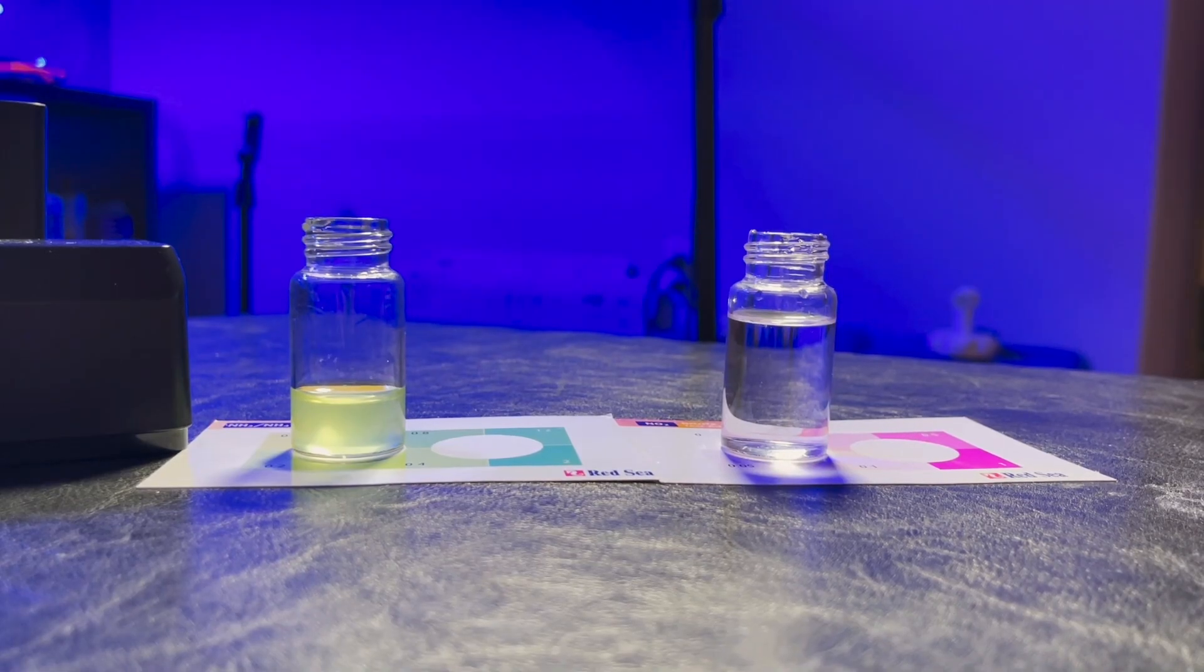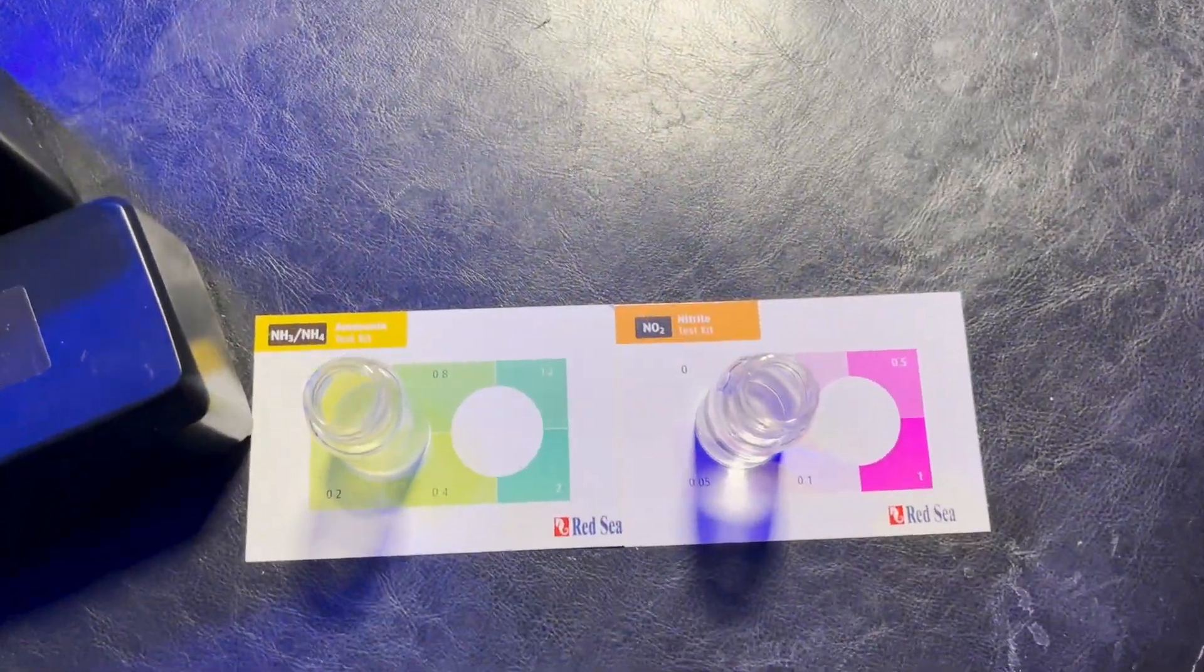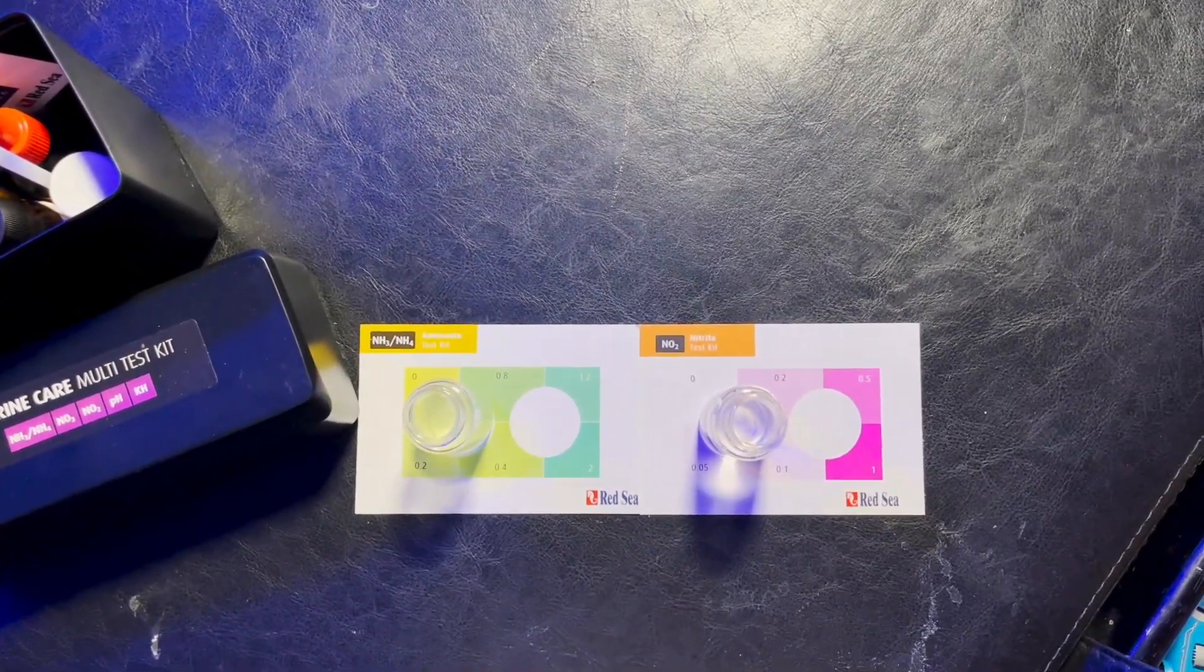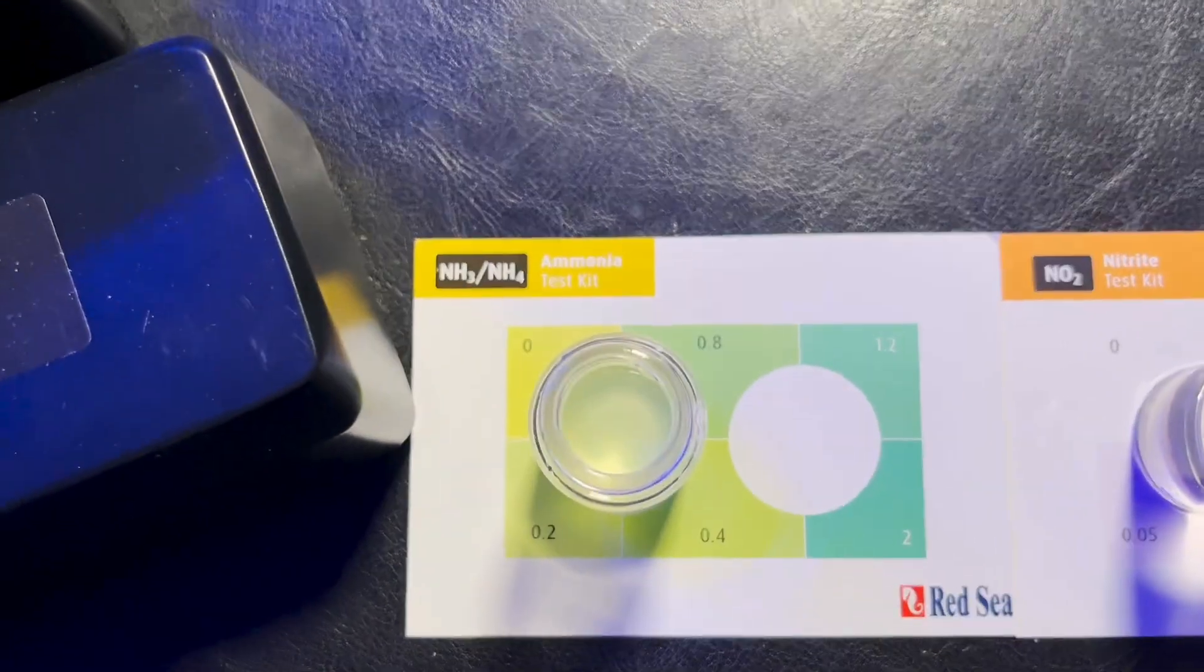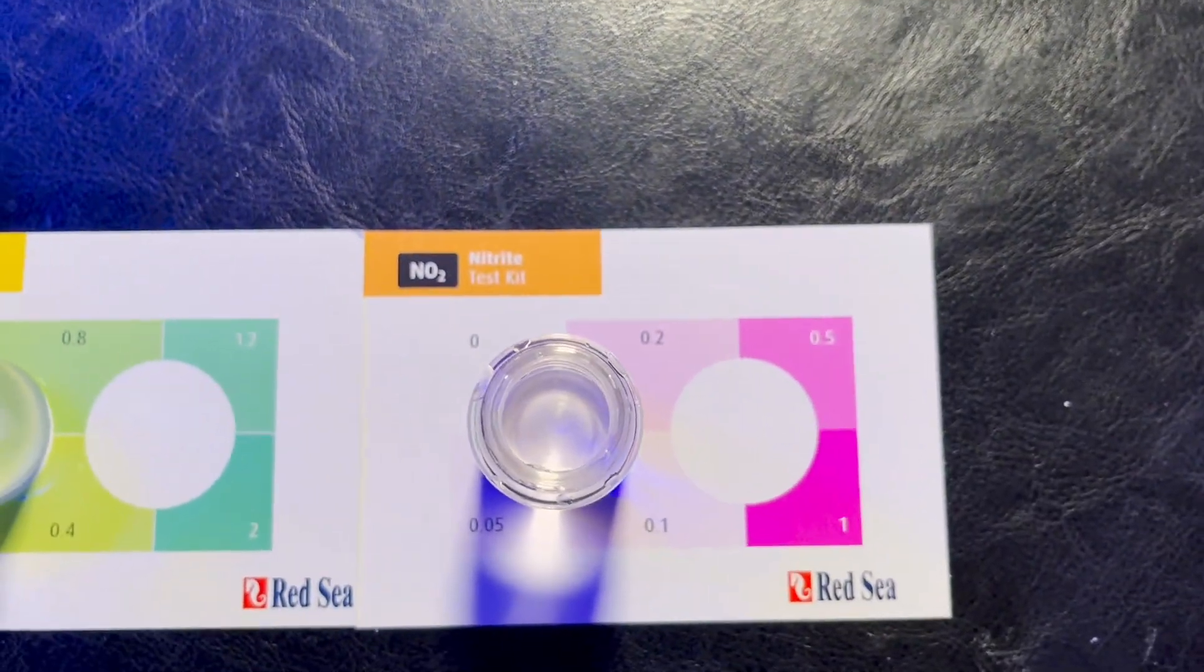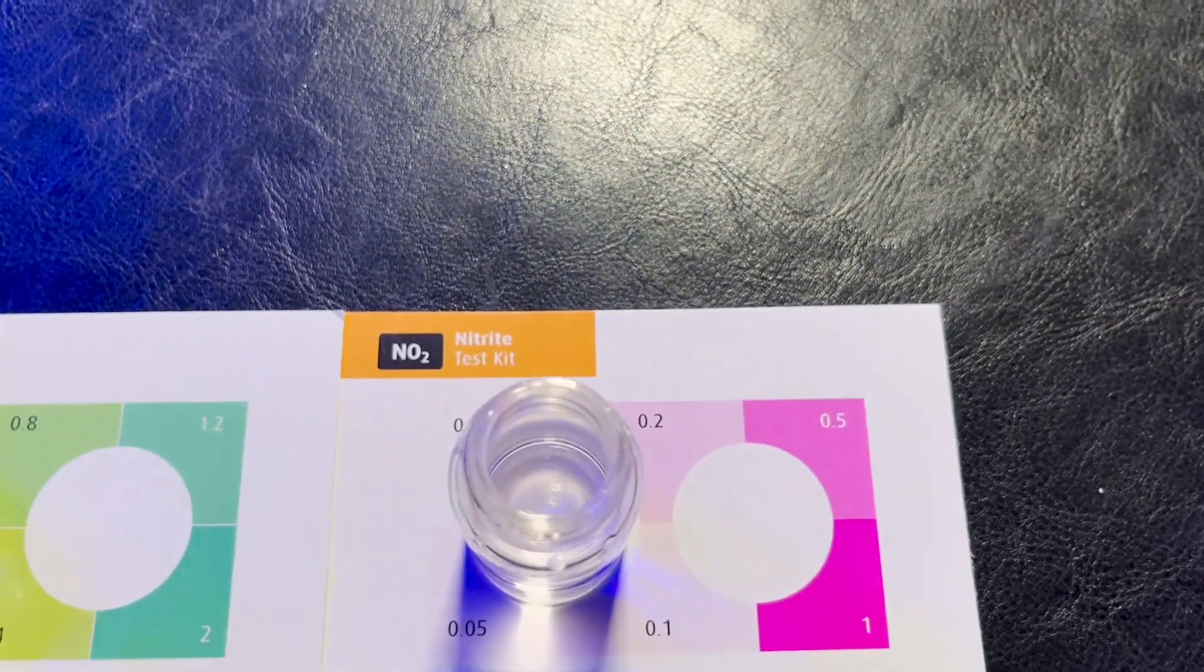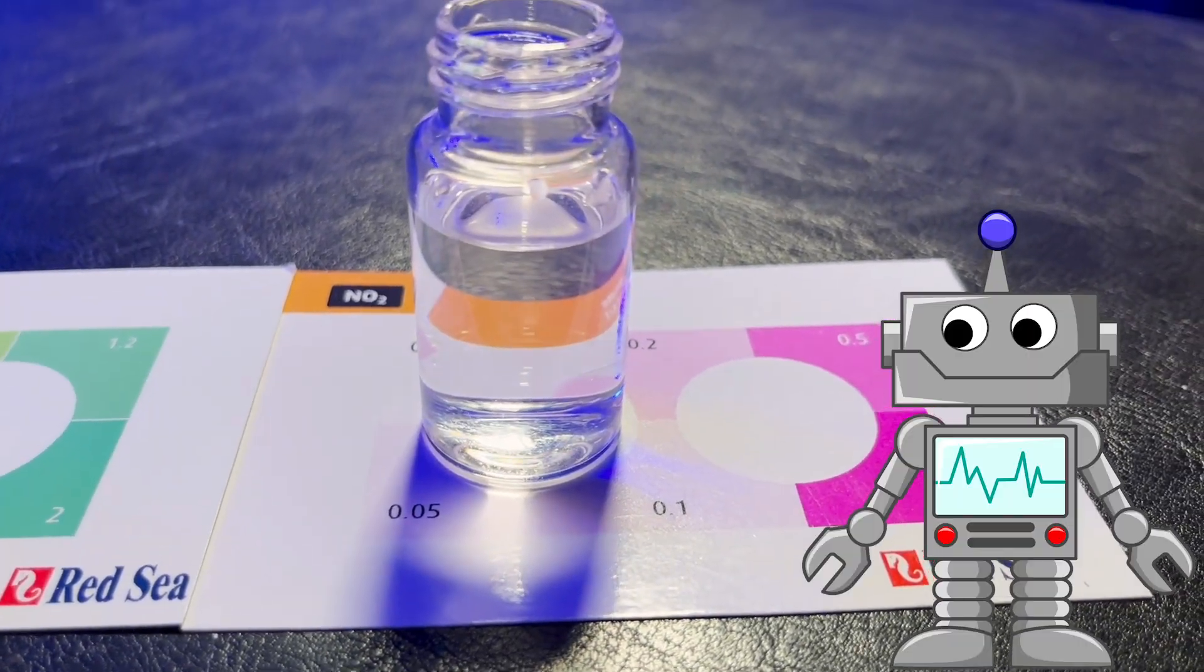All right, guys. So this is about three days later after throwing in a cube of frozen food. As soon as we set up that BioCube, I went ahead and threw it in there and it looks like we already have some ammonia in the system, which is really good. That means it's starting. It's going its way towards our cycle. No nitrite as expected as the nitrospira bacteria take a bit longer to get established in a reef aquarium and are much slower grower than the nitrosomonas bacteria.